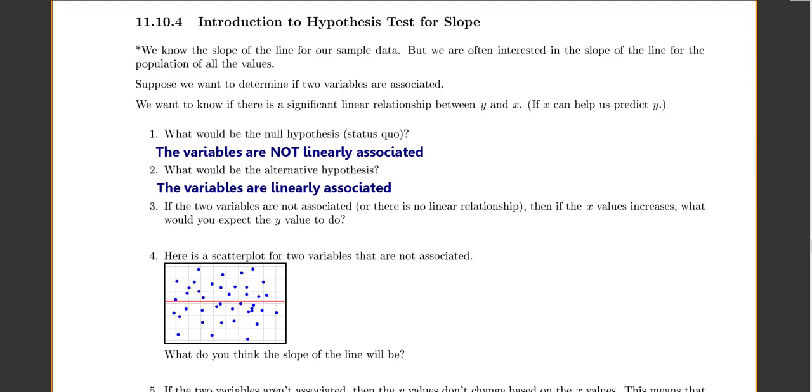If the two variables are not associated, or there is no linear relationship, then if the x values increase, what would you expect the y values to do? I would think if they're not associated, as x goes up, well, let's say I start here. As x goes up, if they don't have any kind of relationship, I'd expect y to stay about the same. So if they are not related, if x goes up, I'd expect y to stay the same.